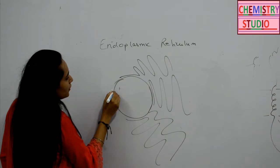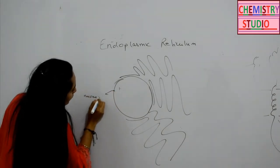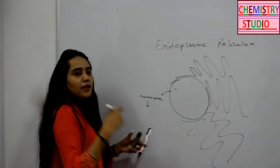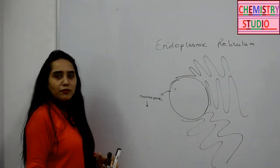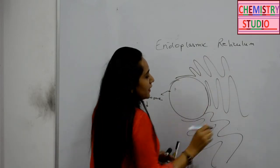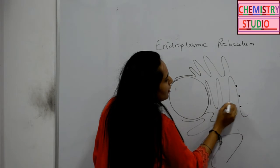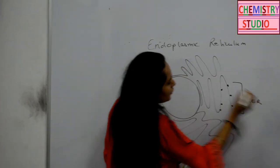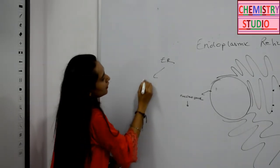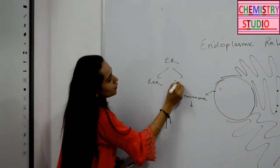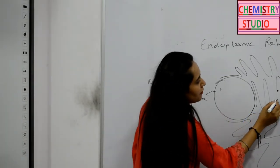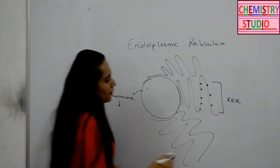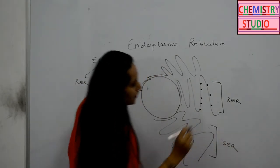In the nuclear membrane, there are nuclear pores present. Nuclear pores have the function of transportation of mRNA outside of the nucleus and transport of certain proteins inside and outside of the nucleus. Within the ER, there are rough regions called rough endoplasmic reticulum and smooth regions called smooth endoplasmic reticulum. The rough ER is rough because of the presence of ribosomes attached to it.